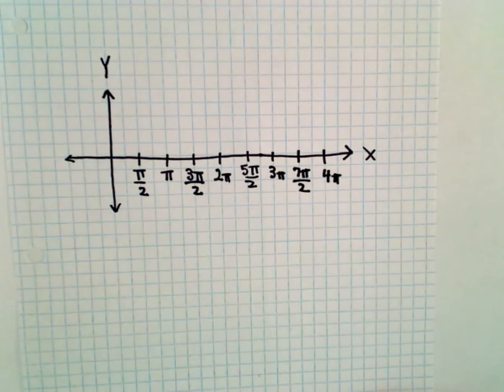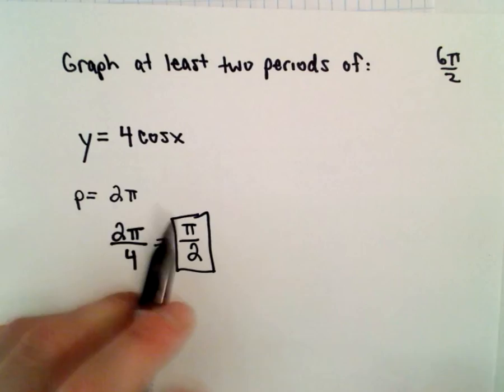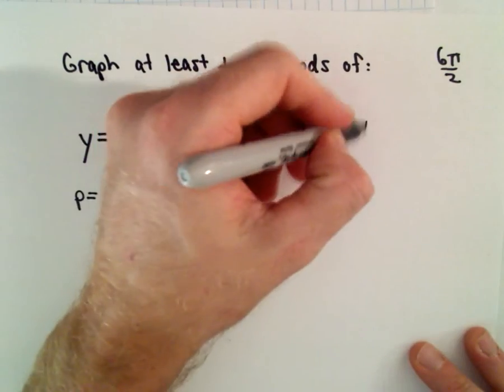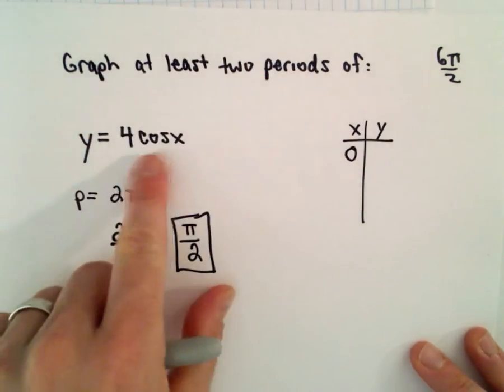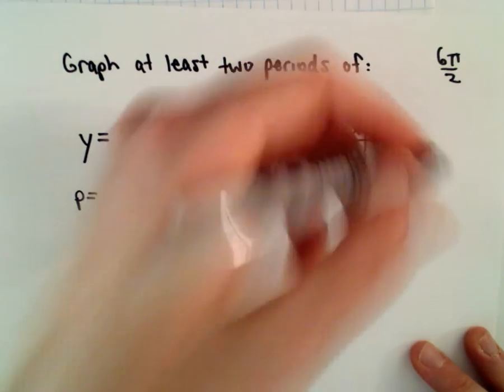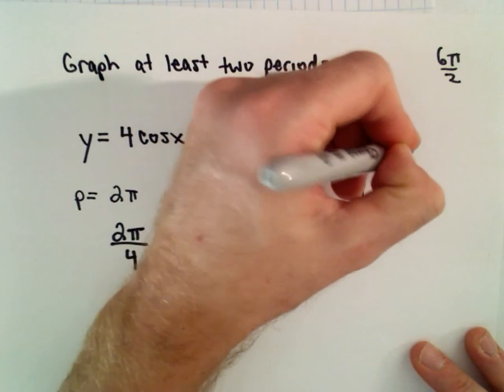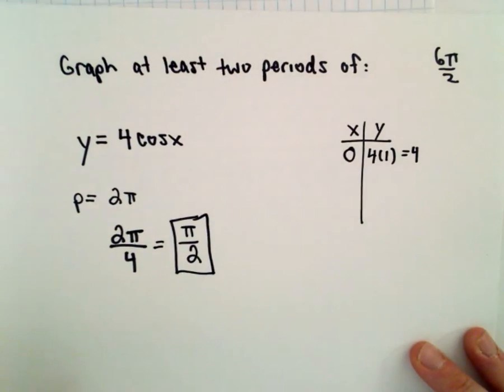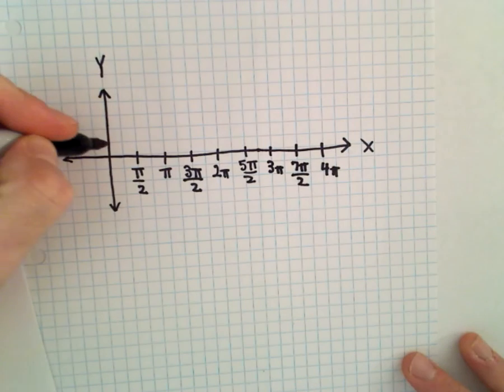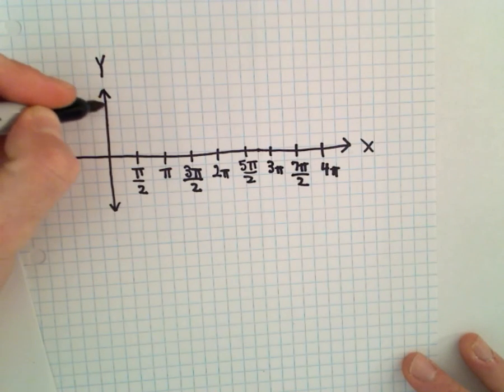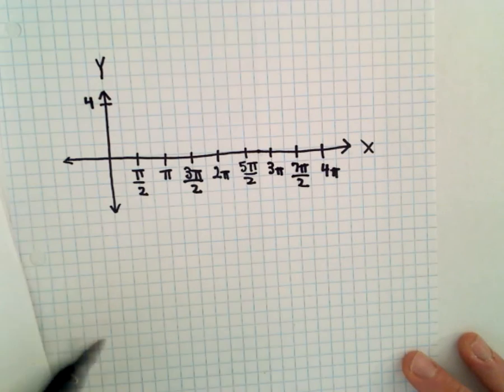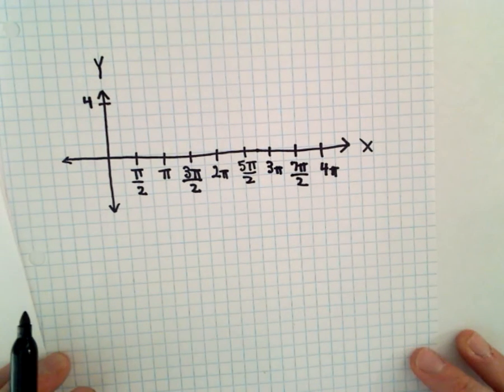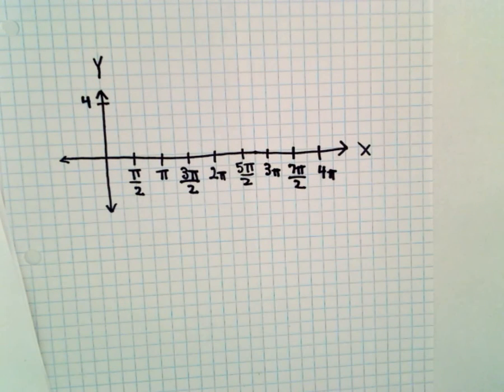Now you can always plot a couple points. So if x is zero, cosine of zero is equal to one, so you'll have four times one, or you'll get four. So here we are up at one, two, three, four. The coordinates on the x-axis are not going to be the same as the coordinates on the y-axis here, so not exactly to scale, but reasonably close.